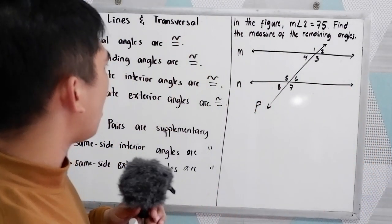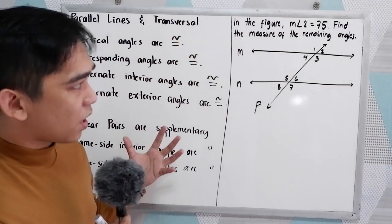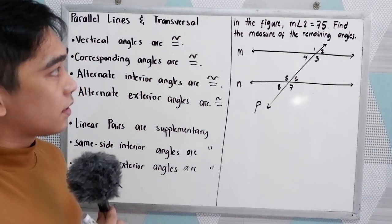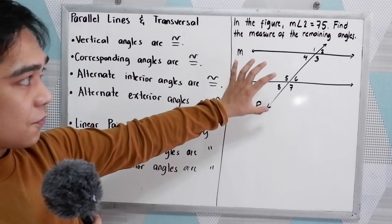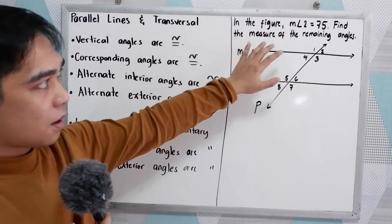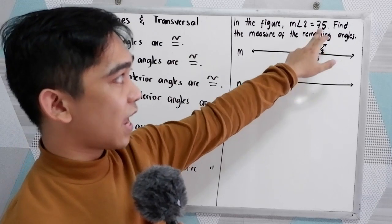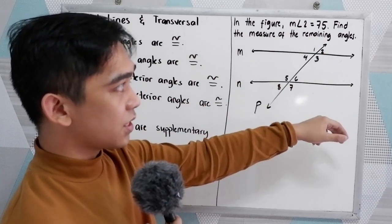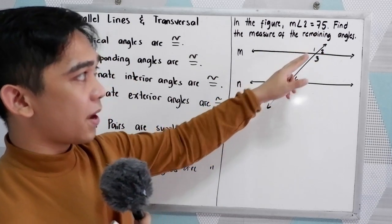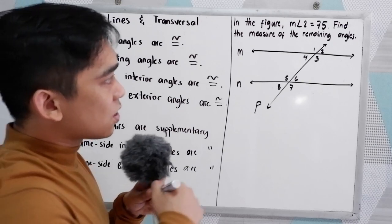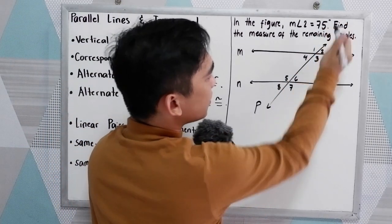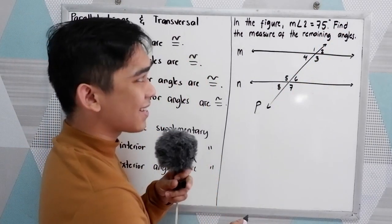Now, to apply our postulate, theorems, and definitions, let's use this figure. In the figure, the measure of angle 2 is equal to 75 degrees. Find the measure of the remaining angles. So angle 2 is 75 degrees — that is the given.